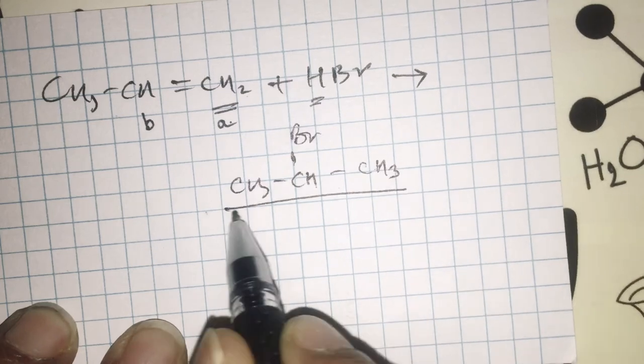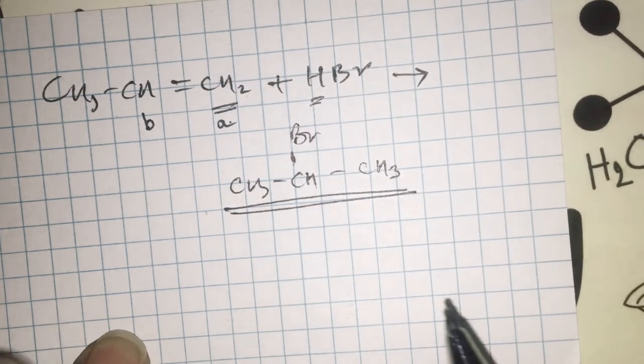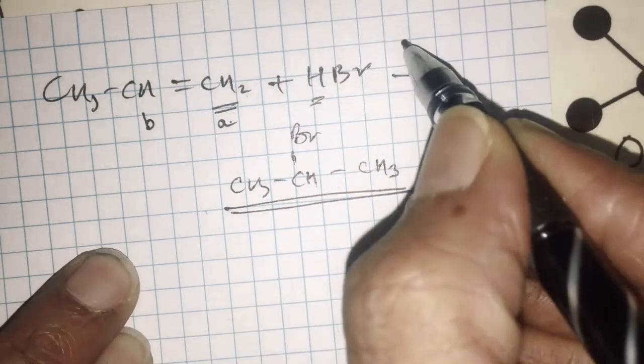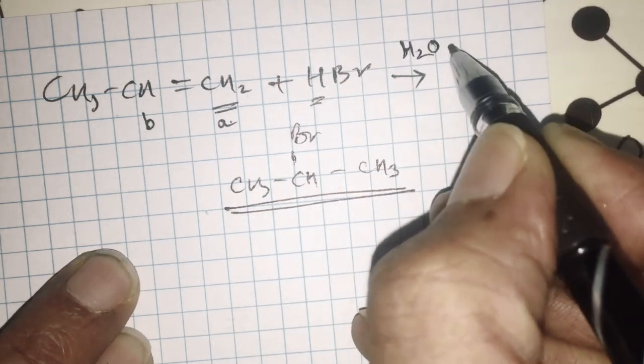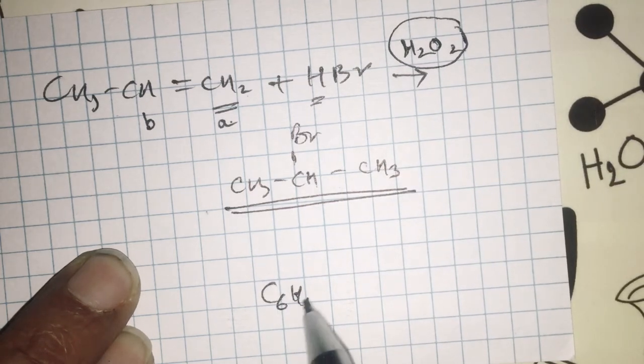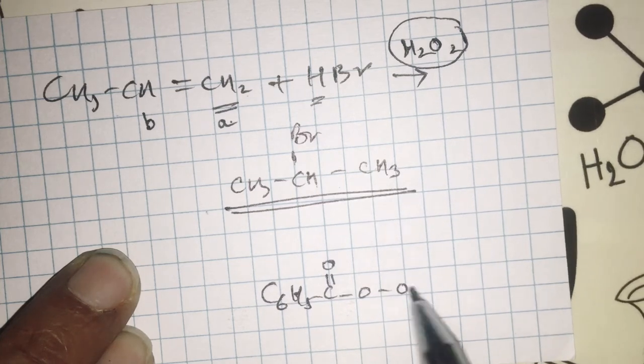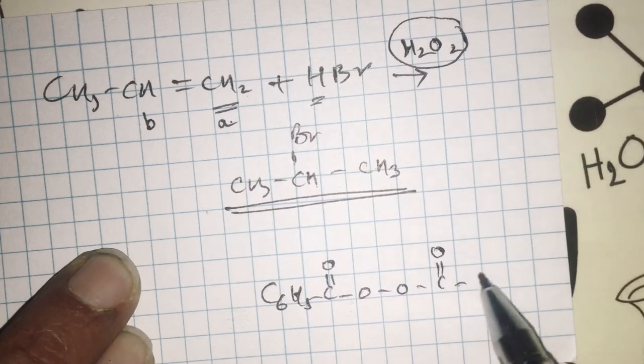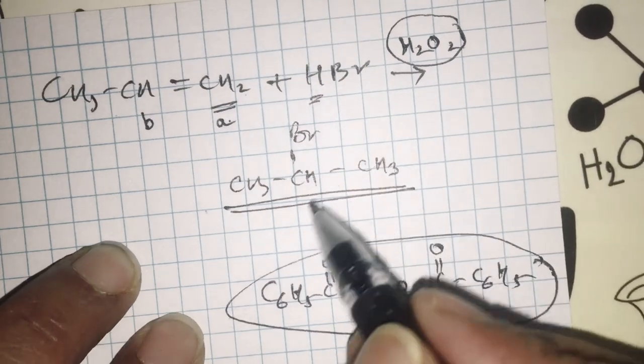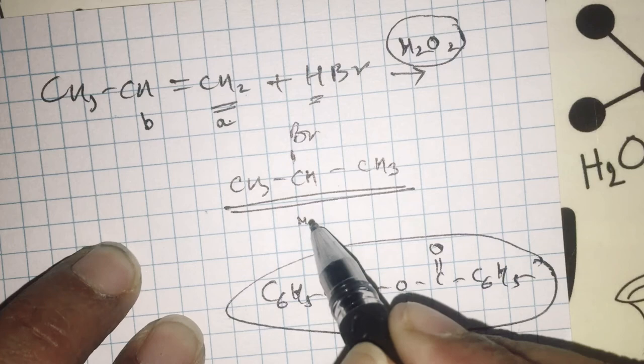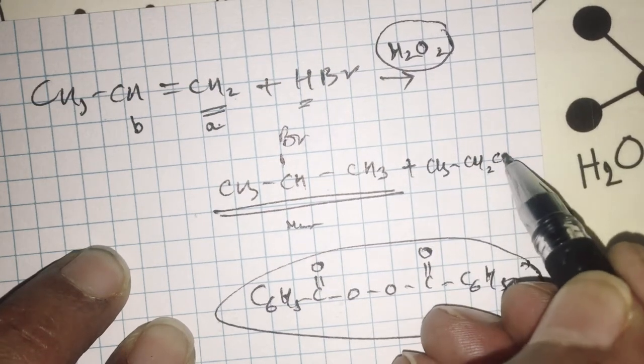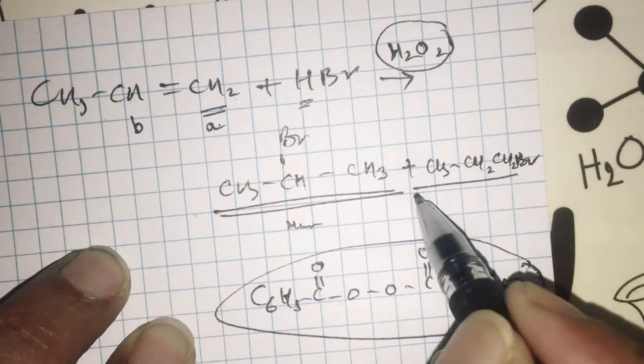However, this expectation goes wrong if the same reaction is carried out in presence of peroxide. It can be hydrogen peroxide or a peroxide like C6H5CO-O-O-COC6H5, benzoyl peroxide. If there is a peroxide, this is going to be a minor product and the major product will be an unexpected CH2CH2Br, 1-bromopropane.